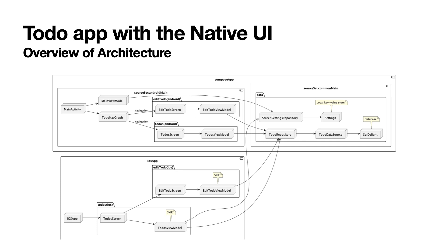Let's delve into the architecture. The architecture follows the Model-View-ViewModel structure. The Android main source set of the Compose app component and the iOS app component each have a view and view model. Each view and view model handles the list screen and edit screen. The Common main source set of the Compose app component is responsible for the model layer.